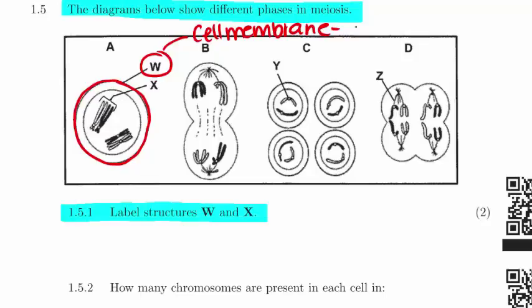Then looking at label X, label X are what we commonly call homologous chromosomes.